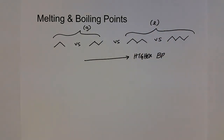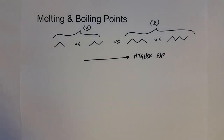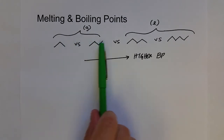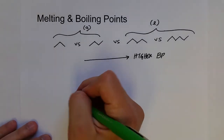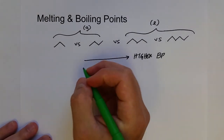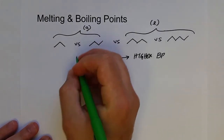You can get even bigger hydrocarbons where they actually become solids at room temperature. So the bigger the hydrocarbon chain, the higher the boiling point because of increased intermolecular forces. And then of course, polarity also plays a role.